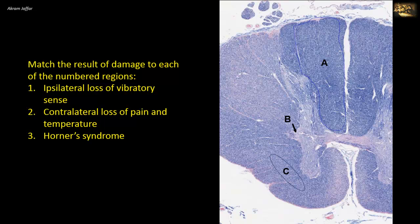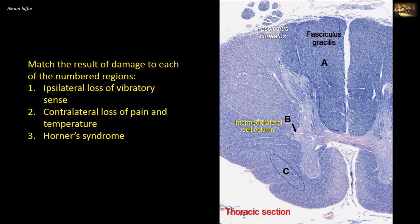Match the result of damage to each of the numbered regions: first, ipsilateral loss of vibratory sense; second, contralateral loss of pain and temperature; and third, Horner's syndrome. The section appears to represent an upper thoracic segment. Note the presence of the intermediolateral cell column B, the beginning of accumulation of fasciculus cuneatus located lateral to fasciculus gracilis — gracilis is the medial part of the dorsal funiculus and cuneatus is slightly lateral to it. C represents the anterior and lateral spinothalamic tract, the ventrolateral system.